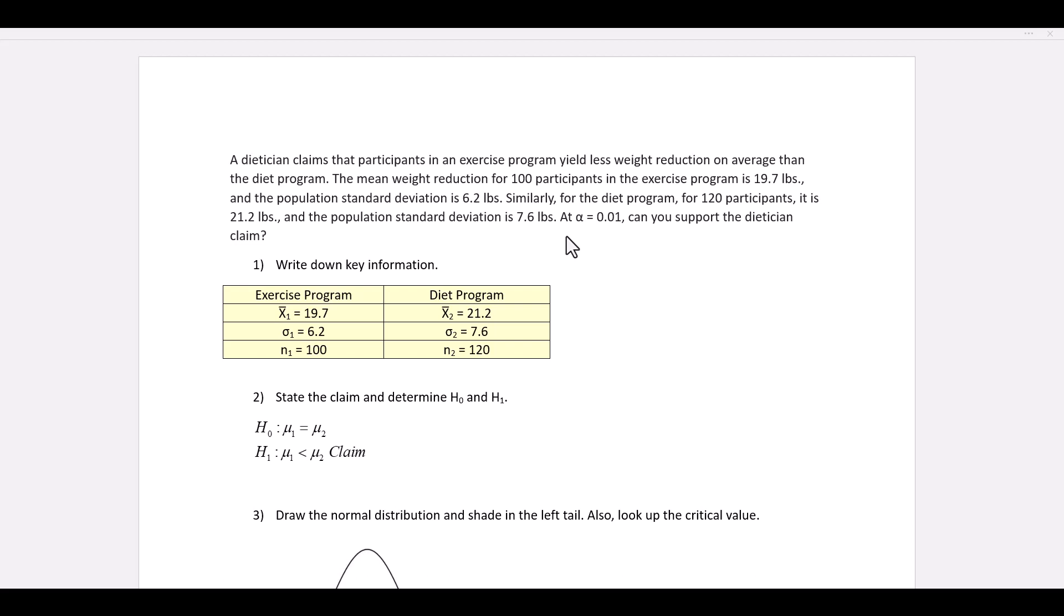A dietician claims that participants in an exercise program yield less weight reduction on average than the diet program. The mean weight reduction for 100 participants in the exercise program is 19.7 pounds, and the population standard deviation is 6.2 pounds. Similarly, for the diet program, for 120 participants, it is 21.2 pounds, and the population standard deviation is 7.6 pounds. At alpha equal to 0.01, can you support the dietician's claim?